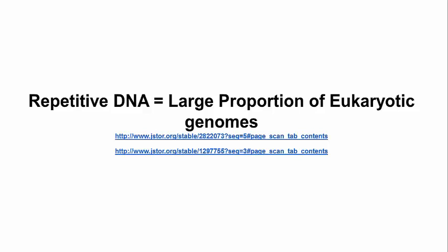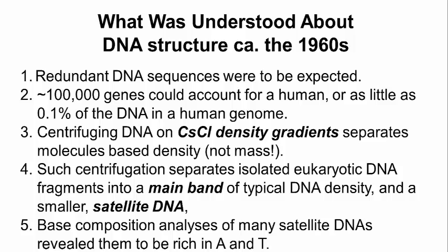Britten and Davidson's results basically confirmed that typical eukaryotic genomes turn out to be rich in redundant sequences. Around the time they began their work, cesium chloride density gradient centrifugation was known to separate eukaryotic DNA fragments into a main band of typical DNA density and a smaller satellite band of greater or lesser density depending on species.